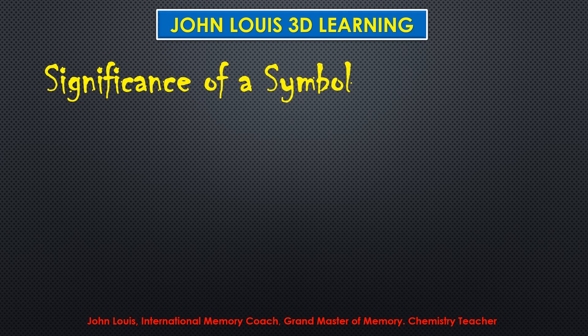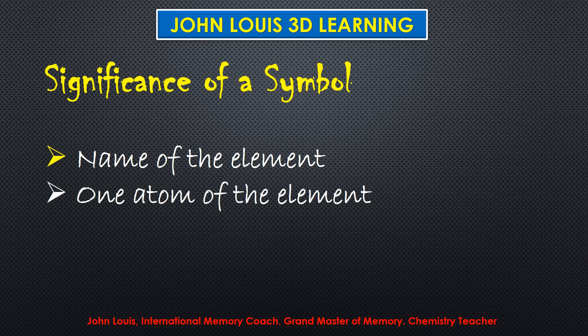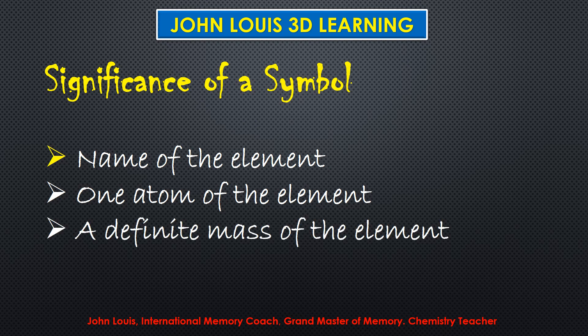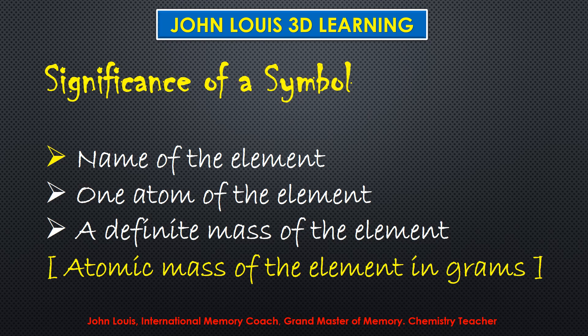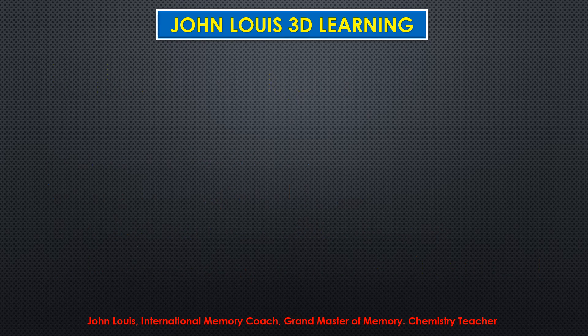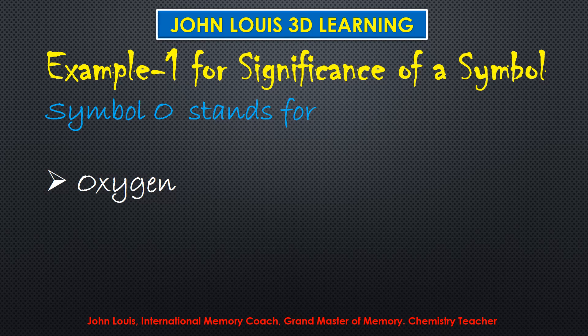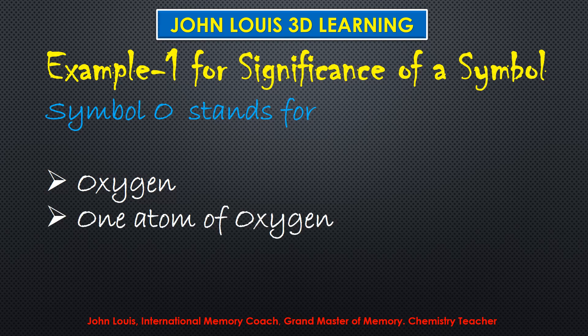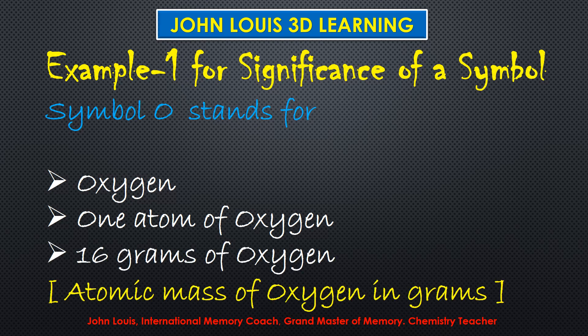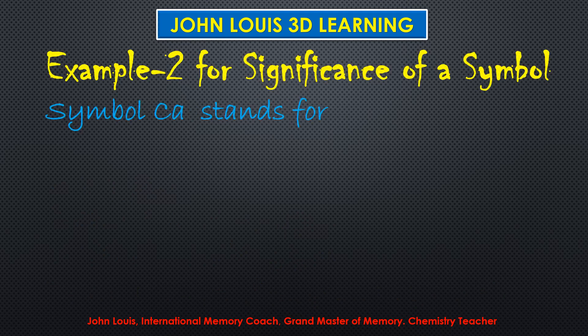A symbol is not just a letter or two letters — it has significance. It tells us three things: first, the name of the element; second, it represents one atom of that element; and third, it represents the definite atomic mass of the element in grams. For example, O represents oxygen, one atom of oxygen, and its atomic mass of 16 grams. Similarly, Ca represents calcium, one atom of calcium, and its atomic mass of 40 grams.